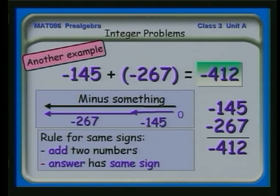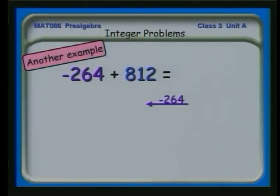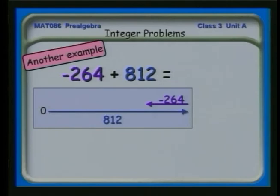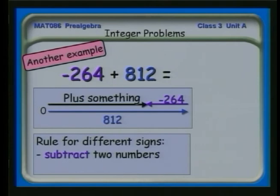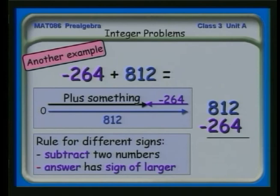One more example: minus 264 plus 812. We start going left minus 264, then go right 812. The 812 overwhelms the 264, so the answer will be positive. The rule for different signs is subtract the numbers and the answer has the sign of the larger number. So we have 812 minus 264, and the answer is 548.